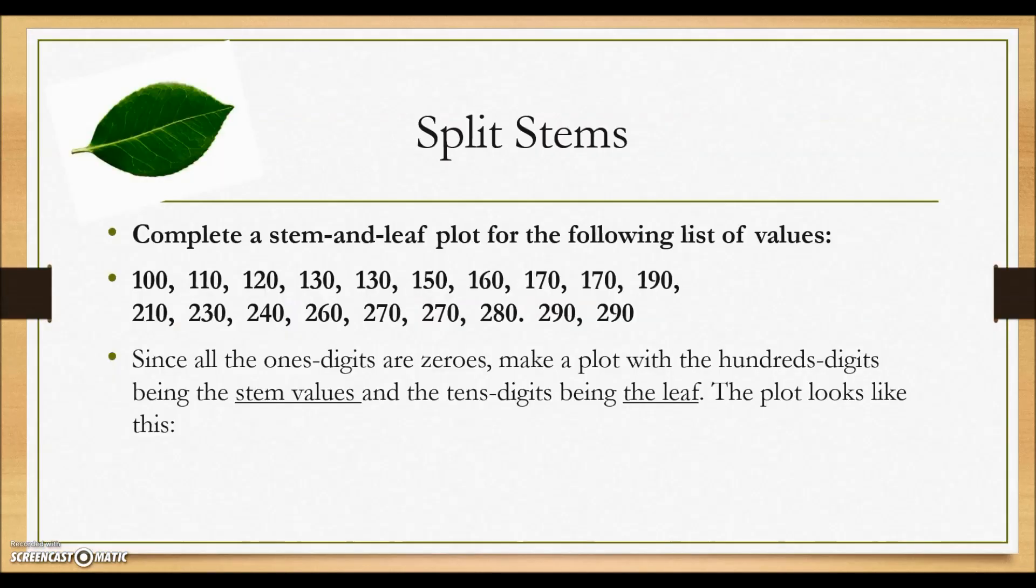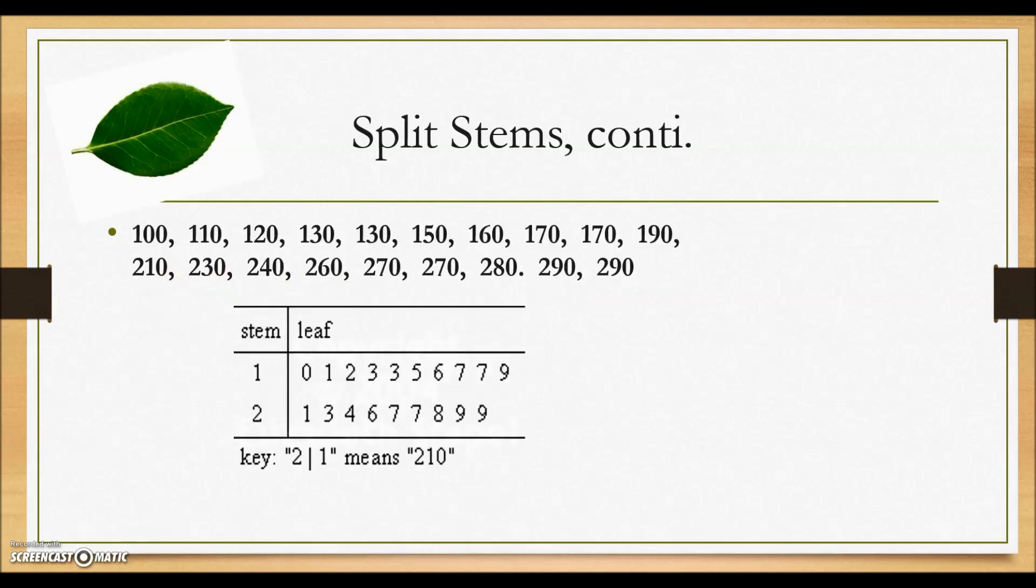Split stems. Complete a stem-and-leaf plot for the following list of values. Since all the ones digits are zeros, make a plot with the hundreds digit being the stem value and the tens digit being the leaf. The plot will look like this.